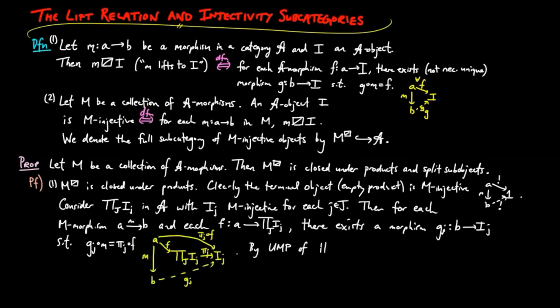Thus, by the universal mapping property of the product, there exists a morphism G from B to the product, such that π_J G M equals π_J F for each J. And thus, GM equals F, giving us the product as an M-injective object.